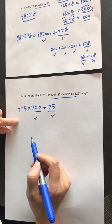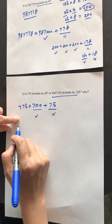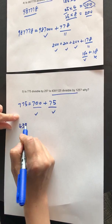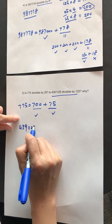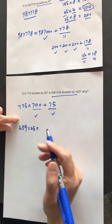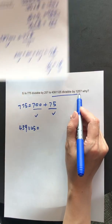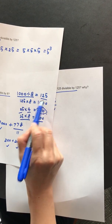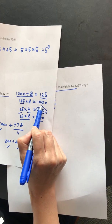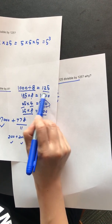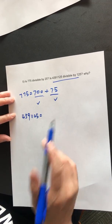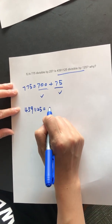Now, whether this number can be divisible by 125. 4,391,125—again, break it down. What number can be divided by 125? 125 multiplied by 8 is 1,000, so every 1,000 is divisible by 125.